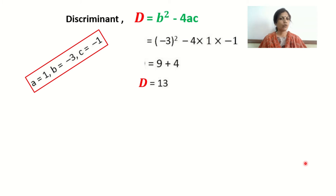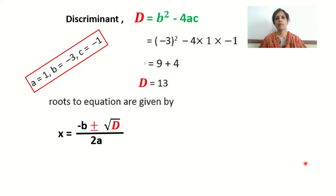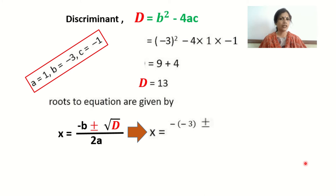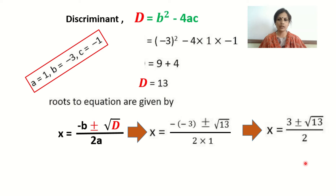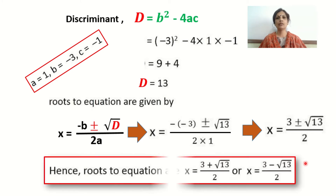The roots of the quadratic equation are given by the formula x equals minus b plus or minus square root of d upon 2a. Substituting: x equals minus of minus 3, plus or minus square root of 13, upon 2. Since minus times minus becomes plus, we get 3 plus or minus root 13 upon 2. So the two roots are x equals 3 plus root 13 upon 2, or x equals 3 minus root 13 upon 2.